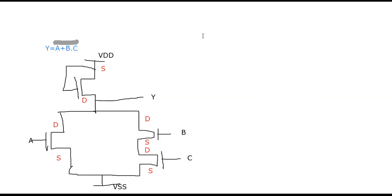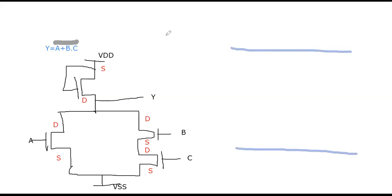Now let us draw the stick diagram. To draw the stick diagram, first you have to draw the metal — metal is blue color. So let us draw the metal in blue first. This is VDD and this will be your VSS line.